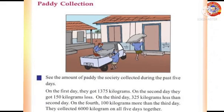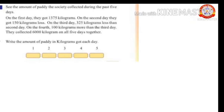See the amount of paddy the society collected during the past five days. On the first day they got 1375 kilograms. On the second day they got 150 kilograms less. On the third day, 325 kilograms less than the second day. On the fourth day, 100 kilograms more than the third day. They collected 6000 kilograms on all five days together.